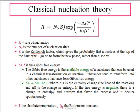The Zeldovich factor Z gives the probability that a nucleus at the top of the barrier will form a new phase rather than dissolving. As we saw in previous videos, once a nucleus forms it can either dissolve or, if it is above the critical radius, grow into a new phase. Z measures that probability. ΔG* is the Gibbs free energy — the available energy used in the process.